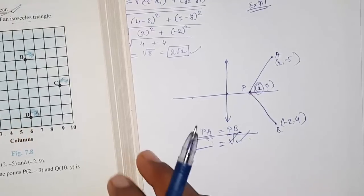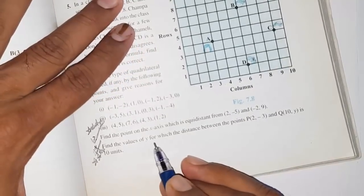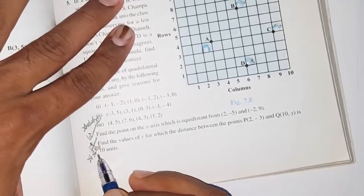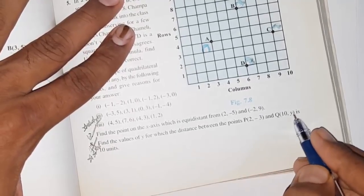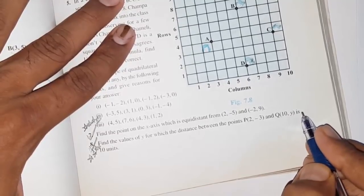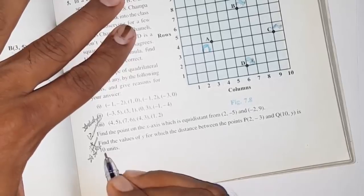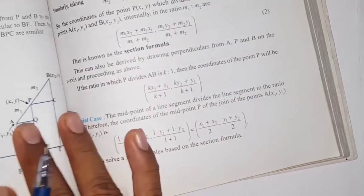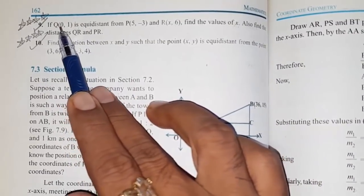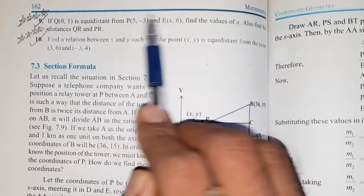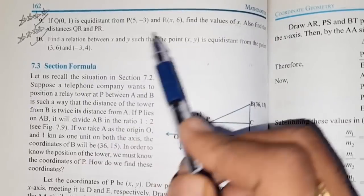For the question 'find the value of y for which the distance between P(2, 3) and Q(10, y) is 10 units': the distance is given as 10 units, so put 10 on the left side of the distance formula and solve for y. Similarly, if Q is equidistant from P and R, set PQ equal to PR on both sides of the distance formula and solve for x.